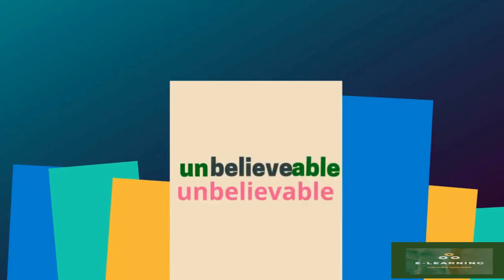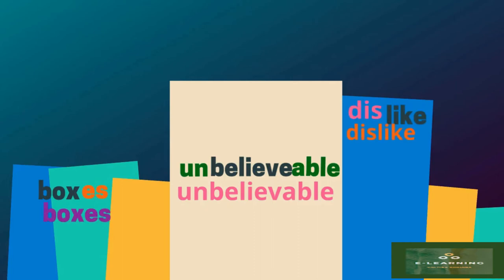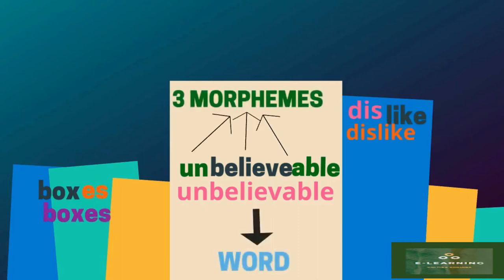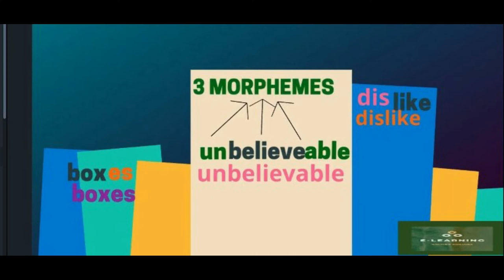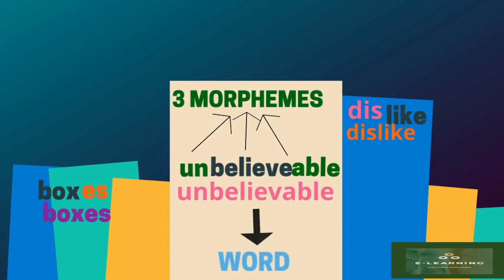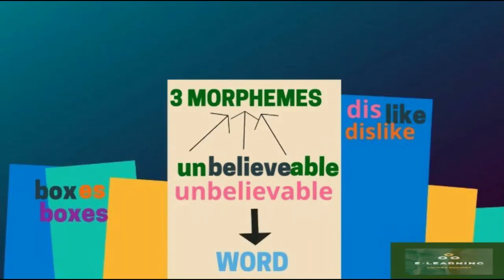The examples are: un-believe-able, which we read as 'unbelievable'; box-s, which we read as 'boxes'; and dis-like, which we read as 'dislike'. From the examples above, 'unbelievable' has three morphemes, 'boxes' has two morphemes, and 'dislike' has two morphemes. The words are 'unbelievable,' 'boxes,' and 'dislike.' From these examples you can identify the differences between morphemes and words.